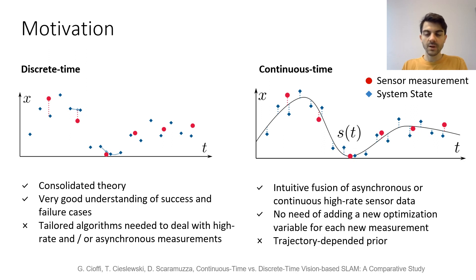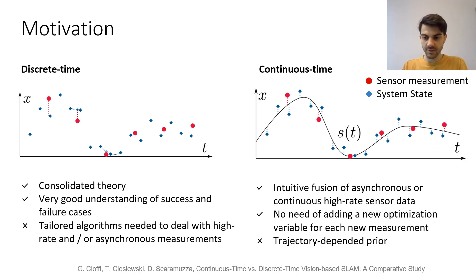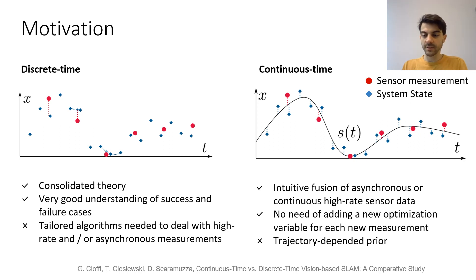Continuous time SLAM makes intuitive fusion of asynchronous and/or high-rate sensor data. It does not require adding a new optimization variable for each new sensor measurement. On the downside, it might introduce a hard-to-tune trajectory-dependent bias.